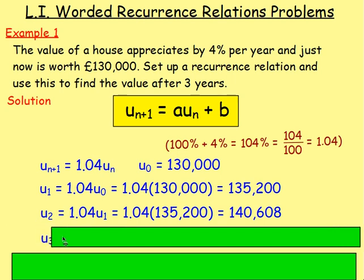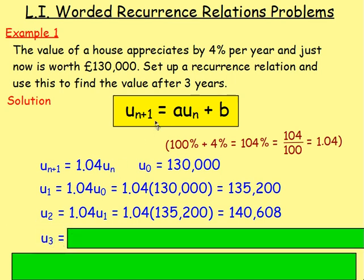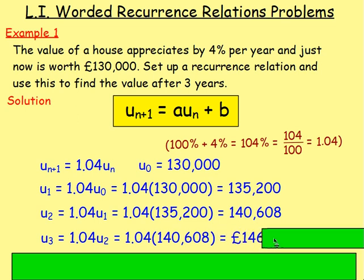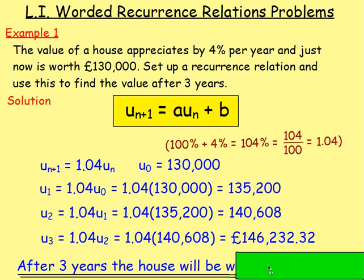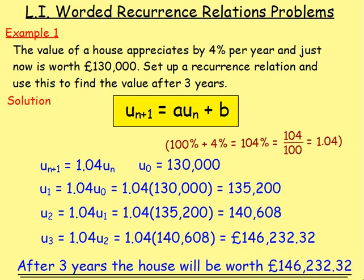And finally, u3 — so in three years' time — again it's 1.04 times the previous value, so 1.04 times u2. Substitute in your numbers and you will get the value. Just make sure when you answer your question you have two decimal places — it is dealing with money. Therefore, after three years, the house will be worth £146,232.32.